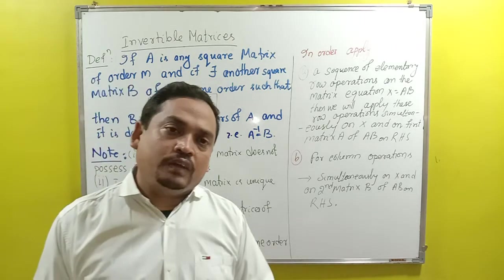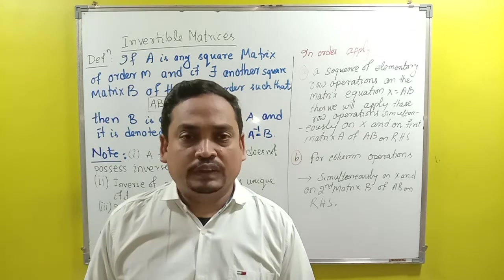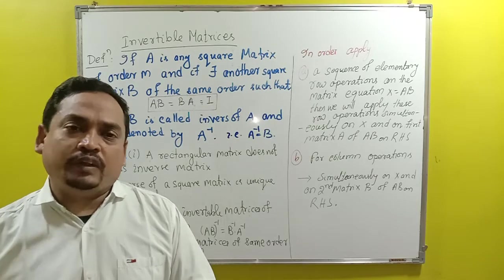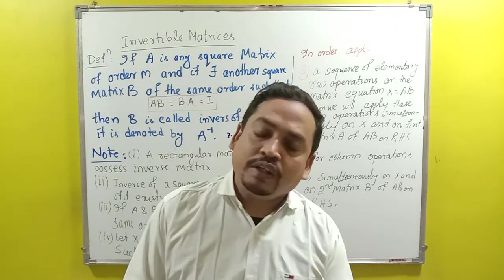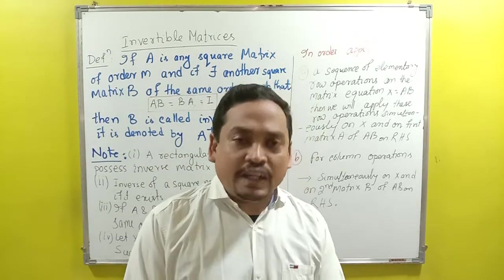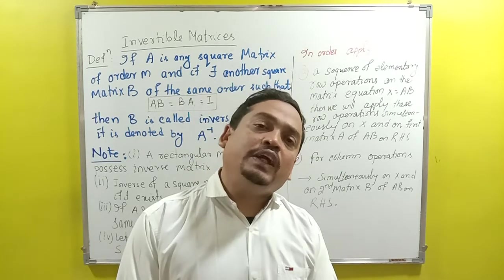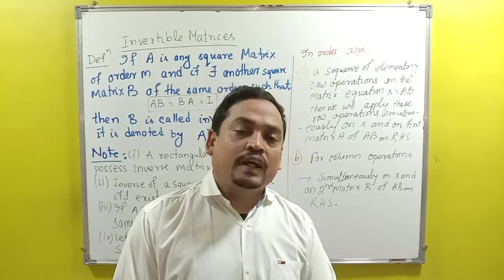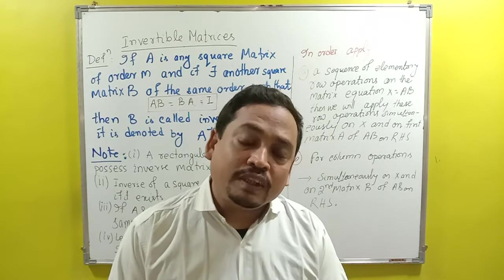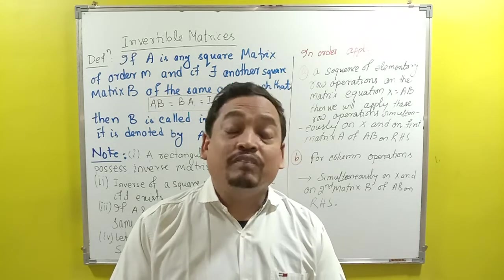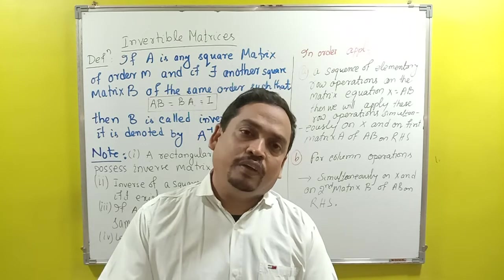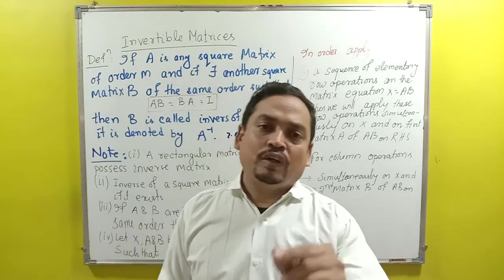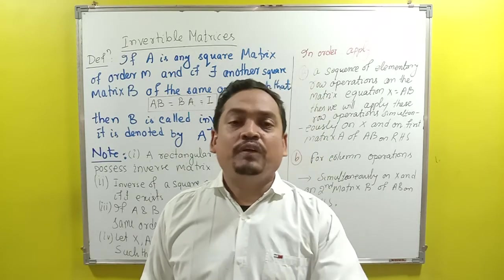Let us first discuss what is an invertible matrix. When we say inverse — everybody knows inverse. Multiplicative inverse of 5 is 1/5 (the reciprocal). Additive inverse of 5 is −5. When you multiply 5 by 1/5 you get 1, the multiplicative identity. When 5 + (−5) = 0, you get the additive identity.